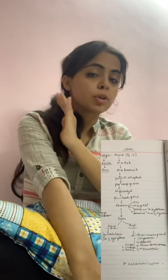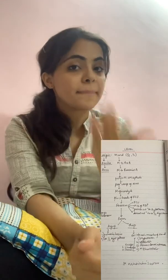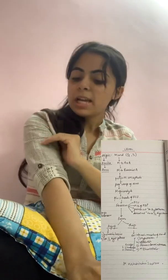In the axilla there are no branches, and its relation is that it lies medial to the axillary artery. In the arm there are also no branches; it lies medial to the brachial artery. Then it pierces the medial intermuscular septum and reaches the posterior compartment of the arm.